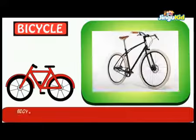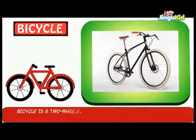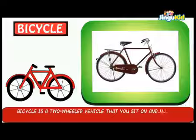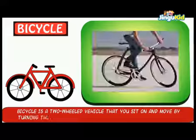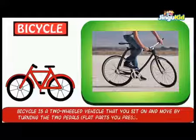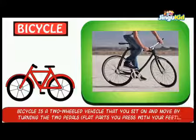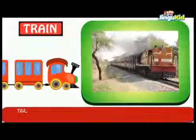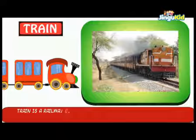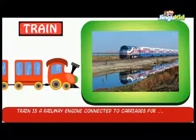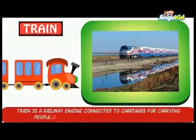Bicycle. A bicycle is a two-wheeled vehicle which you sit on and move by turning the two pedals that you press with your feet. Train. A train is a railway engine connected to carriages for carrying people.